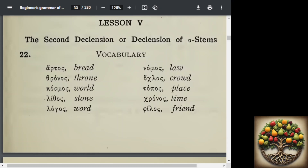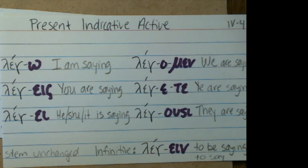In the homework, we will be writing these on a vocabulary card. As a reminder, when we talked about verbs in Lesson 4, we were conjugating verbs — I will just show the present indicative active card. This is the conjugation of a verb, and what we are going to be doing now is declining a noun.